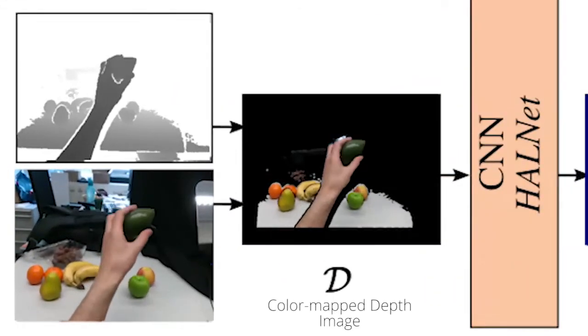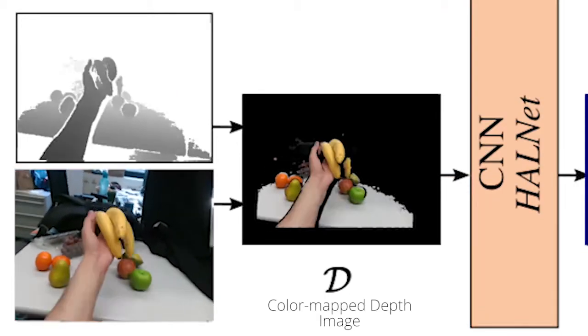We first create a colored depth map from the input depth map and color image produced by a commodity RGBD sensor.